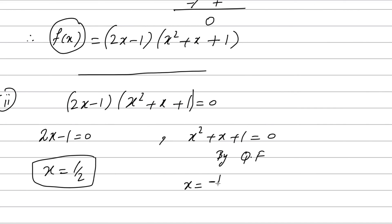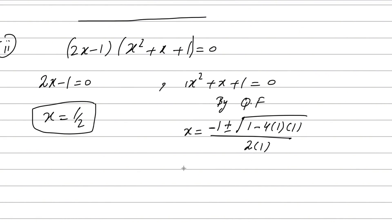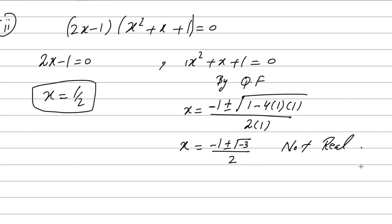By the quadratic formula with a equals 1, b equals 1, c equals 1: x equals (minus 1 plus or minus the square root of (1 minus 4)) over 2. The discriminant is 1 minus 4 equals minus 3, which is negative. A negative value under the square root means these solutions are not real, so we reject them. Therefore, there is only one real solution.